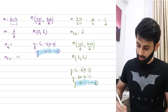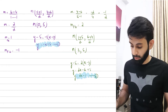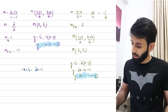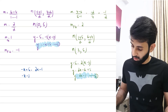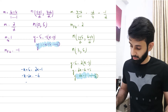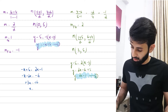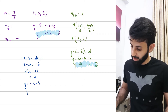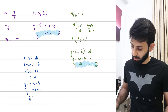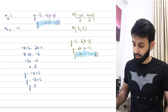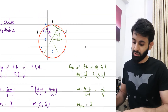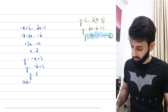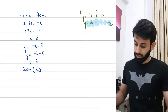Now I solve the two equations simultaneously by equating them: -x + 5 = 2x - 1, giving -3x = -6, so x = 2. Substituting into the first equation: y = -2 + 5 = 3. So the point of intersection, which is also the center of the circle, is (2, 3).